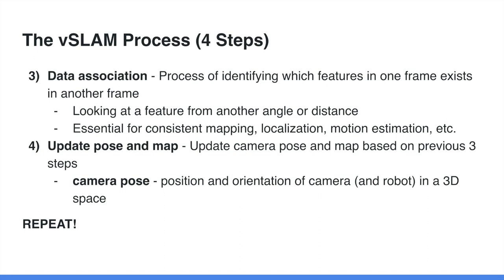The third step is data association. Having identified features in a particular frame, the robot looks back at all other frames of video the camera has captured to check whether it has seen that particular feature before — from another angle or another point. This helps the robot figure out where it's located and build a 3D map. For example, if the robot sees a door from three different positions at different times, the perspectives from all three frames allow it to better determine the door frame's size and exact location.